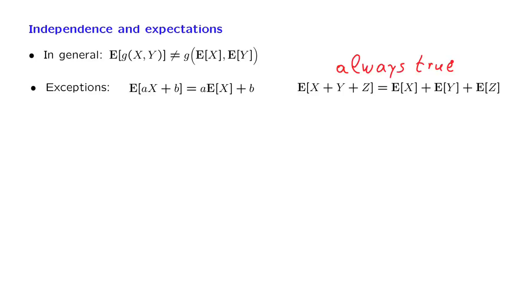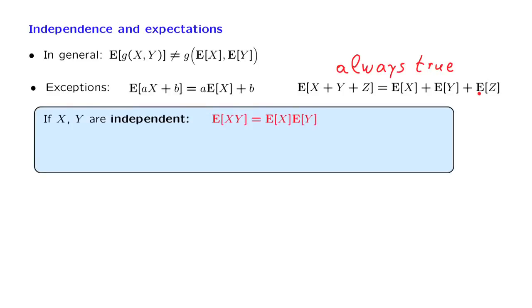When we have independence, there is one additional property that turns out to be true. The expected value of the product of two independent random variables is the product of their expected values. Let us verify this relation.